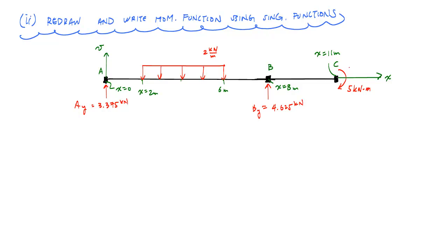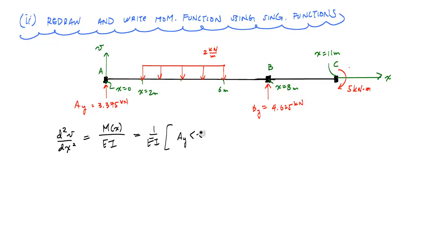I start with the curvature relationship: d²v/dx² equals M(x) divided by EI, where EI is constant throughout. Writing the moment function using singularity functions gives 1 over EI times: AY times ⟨x − 0⟩¹ for the reaction at A — power of 1 because we multiply kilonewtons by distance to get kilonewton·meters — then minus 2 kilonewtons per meter over 2 times ⟨x − 2⟩² for the distributed load turning on at x equals 2 meters, squared to match units.